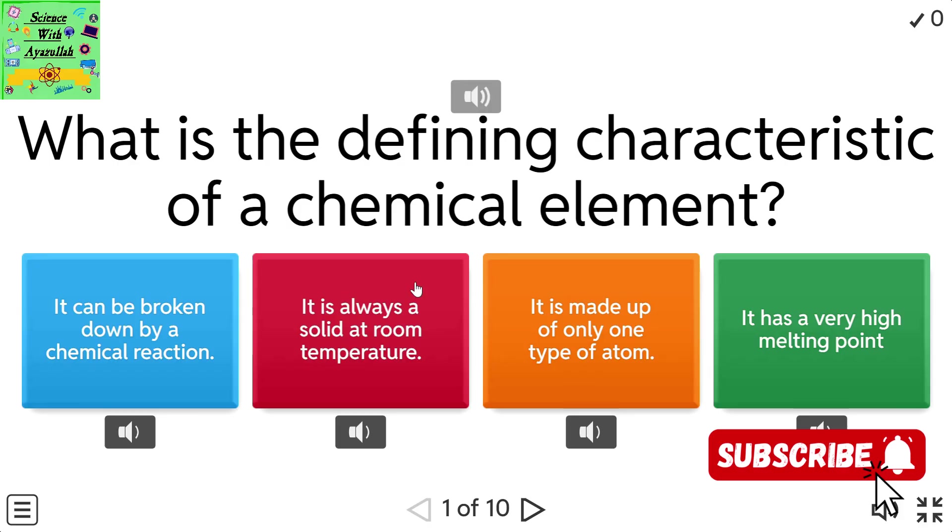What is the defining characteristic of a chemical element? It can be broken down by a chemical reaction. It is always a solid at room temperature. It is made up of only one type of atom. It has a very high melting point.